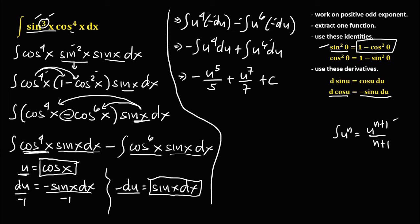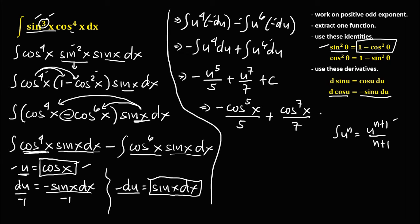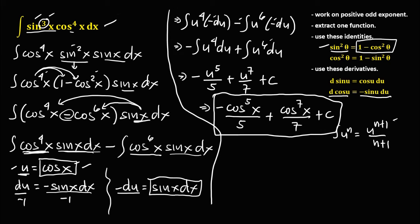Substituting back u = cos x, the final answer is: negative cos⁵x/5 plus cos⁷x/7 plus C. This is the integral of the given trigonometric expression.